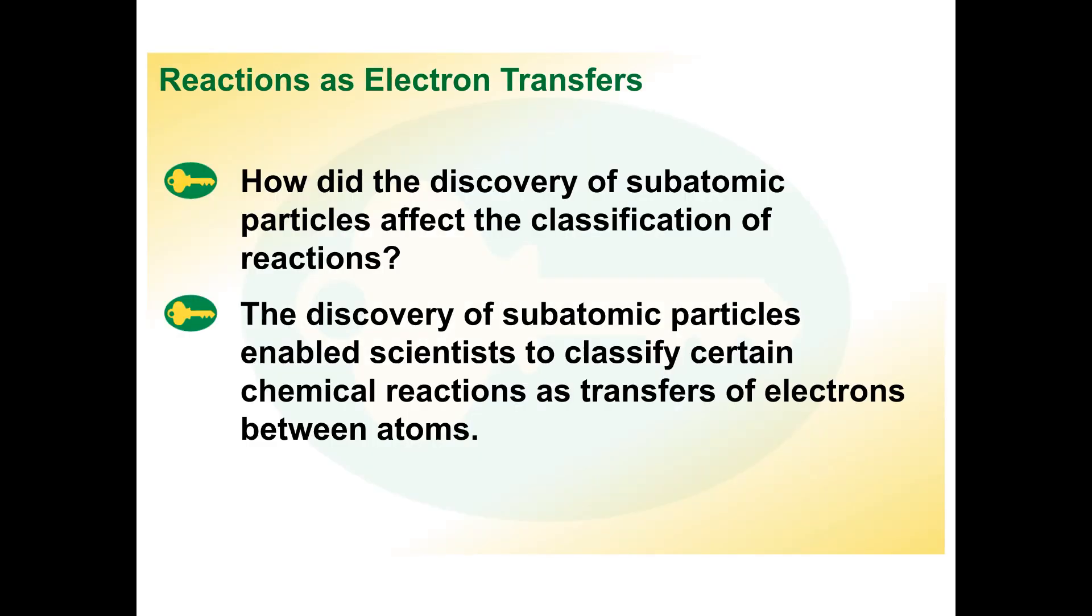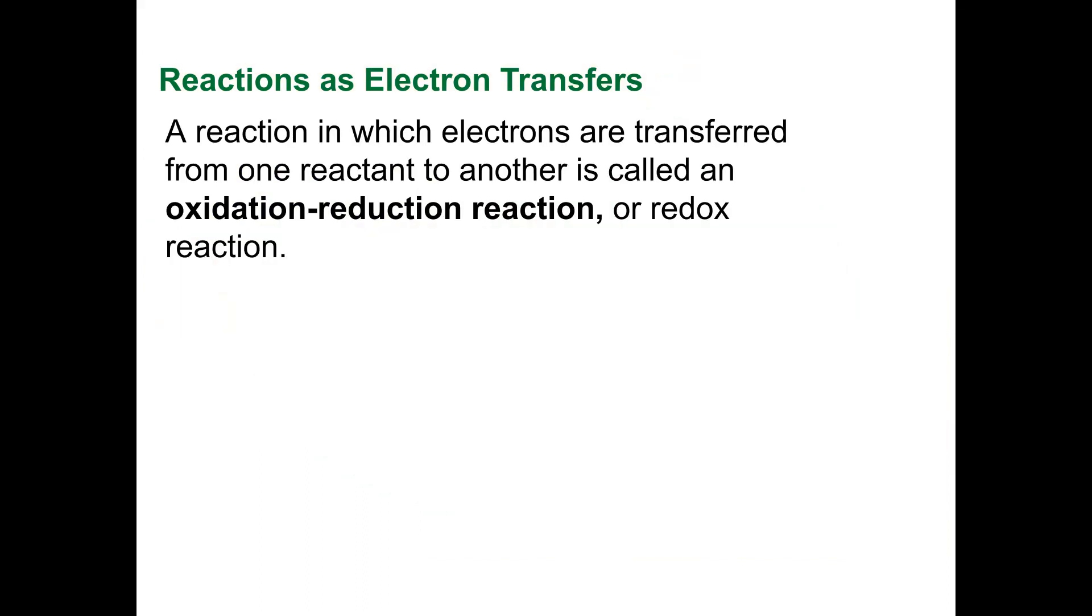So how did the discovery of subatomic particles affect the classification of reactions? Well, the discovery of subatomic particles enables scientists to classify certain chemical reactions as transfers of electrons between atoms. There's a reason all this stuff takes place, and it has to do with the subatomic particles, the structures of the atoms, and so on and so forth.